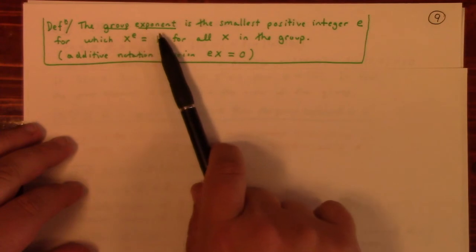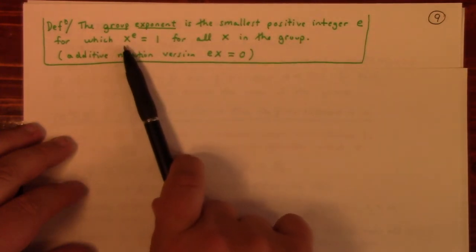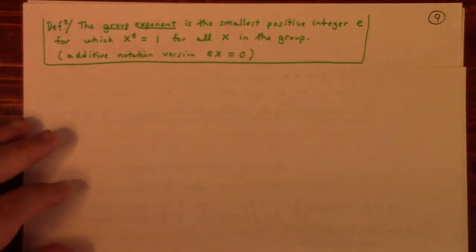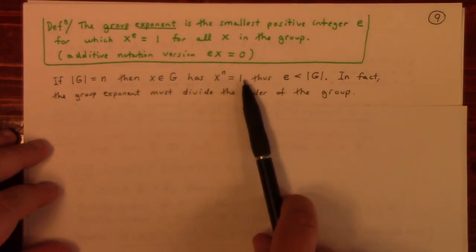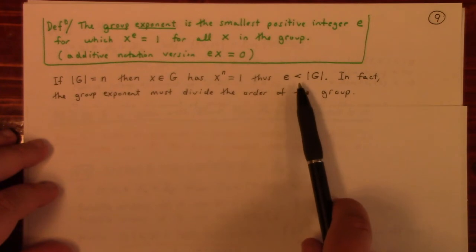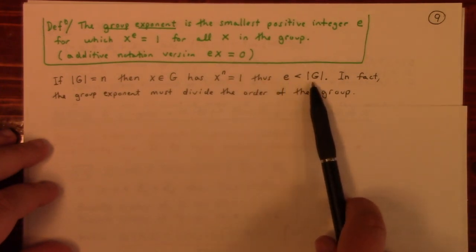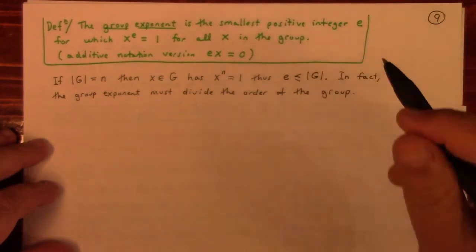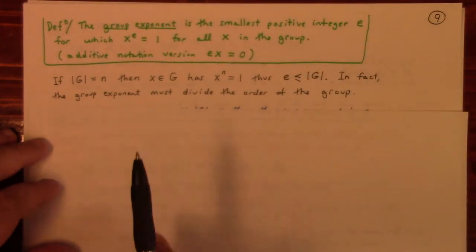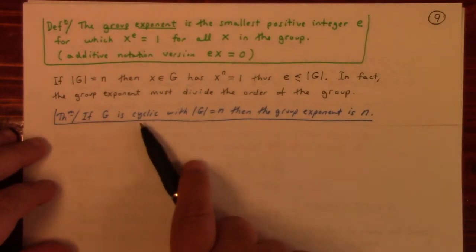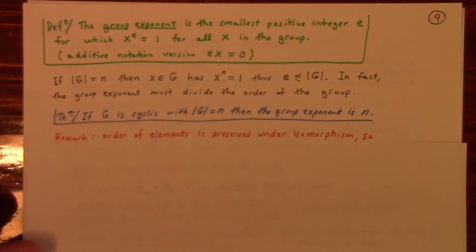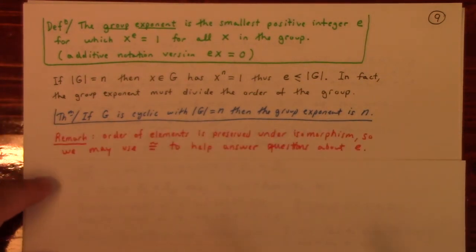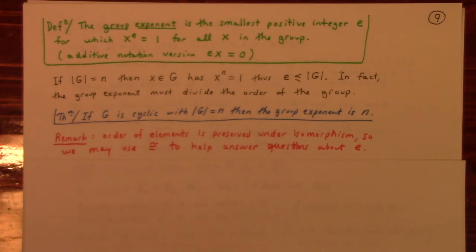The group exponent is the smallest positive integer E for which x^E = 1 for all x in the group. Of course, if the group has order n, then x^n = 1 by Lagrange's theorem, so the group exponent must divide the order of the group. If G is cyclic of order n, the group exponent is exactly n. But if G is not cyclic, it's more interesting. Since the order of elements is preserved under isomorphism, we can use our isomorphisms to help find the group exponent.